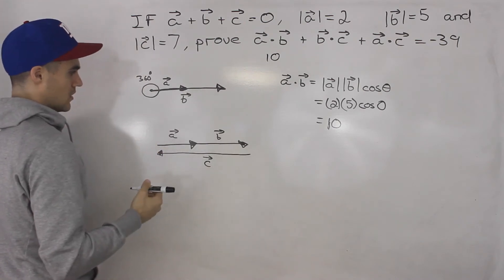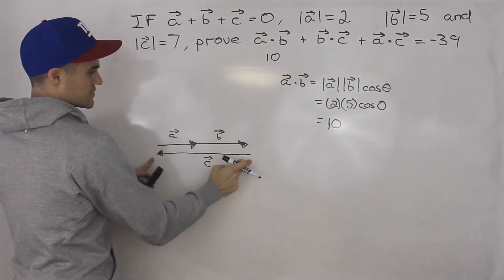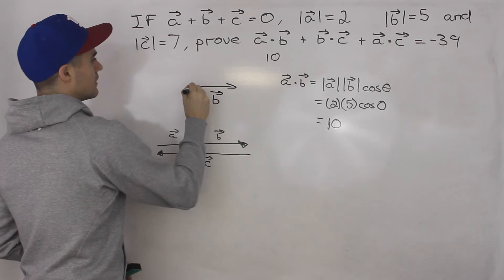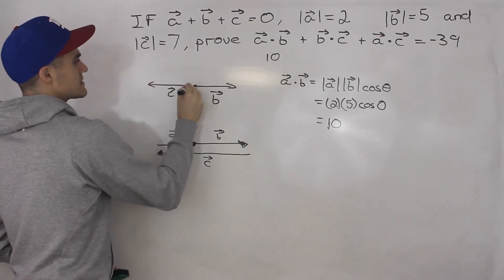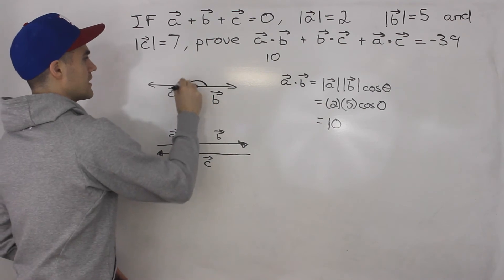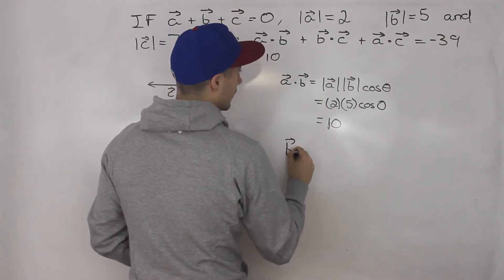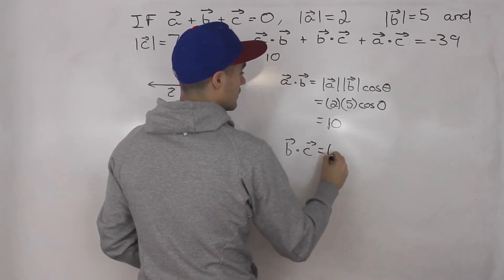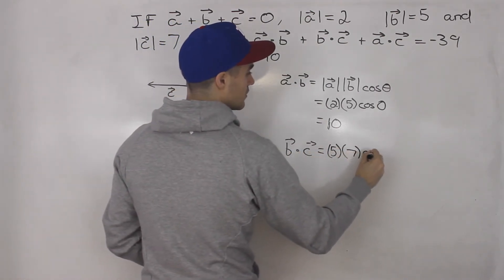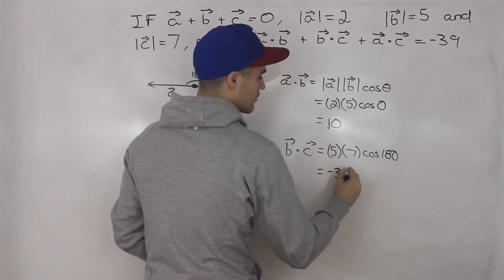What about between b and c? If we draw vectors b and c tail to tail — this is vector b here, this is vector c — if we shift vector c up and put them tail to tail, this would be vector b, and then this here would be vector c. The angle between vectors b and c is 180 degrees. So the dot product between b and c is going to be the magnitude of b, which is five, times the magnitude of c, which is seven, times cos of 180. Cos of 180 is negative one. Five times seven gives us negative 35.